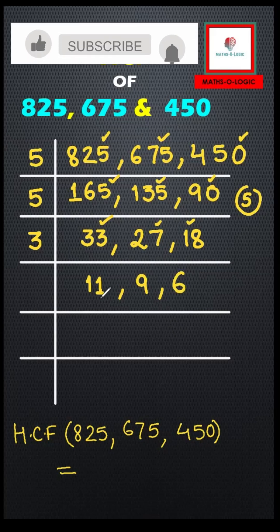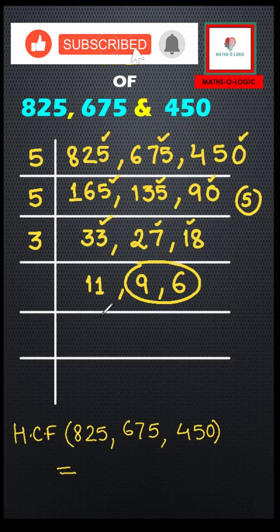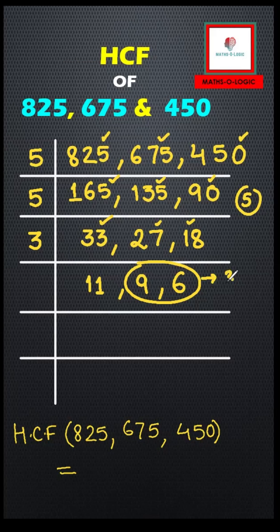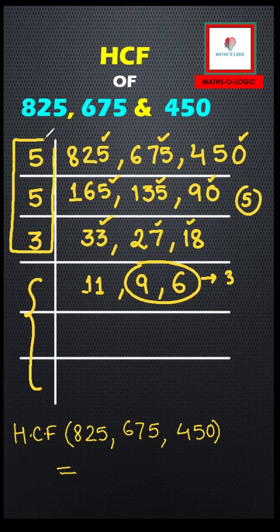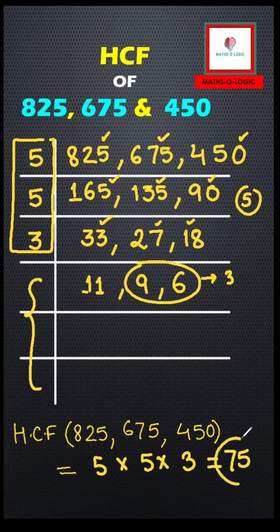Now the numbers I have are 11, 9, and 6. While 9 and 6 share a common factor of 3, that 3 is not a common factor of 11. So I can't divide further — the only common factor of 11, 9, and 6 is 1. Therefore, the HCF is 5 × 5 × 3 = 75.